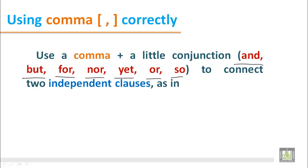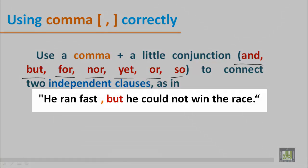In the following sentence, we can find: He ran fast, but he could not win the race. Here there are two independent clauses. First one: He ran fast. And another one: He could not win the race. In between these two independent clauses, we can find a conjunction 'but,' and before 'but' we have used comma.